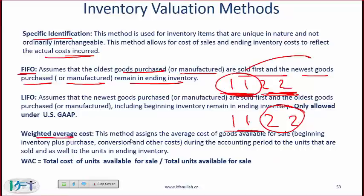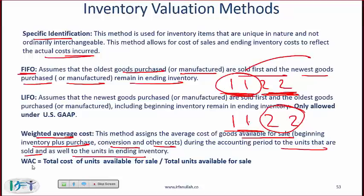Weighted average cost assigns the average cost of goods available for sale — which is beginning inventory plus purchases, conversion, and other costs during the accounting period — to units sold and to units in ending inventory. Weighted average cost equals total cost of units available for sale divided by total units available for sale.